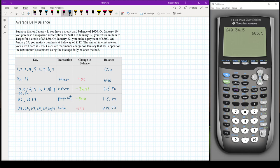We had the balance of 640 for two days, the balance of 605.50 for 1, 2, 3, 4, 5, 6, 7, 8, 9, 10, for 10 days, the balance of 105.50 for 3 days, and then the balance of 217.50 for 1, 2, 3, 4, 5, 6, 7 days.